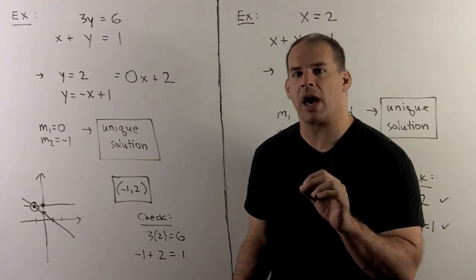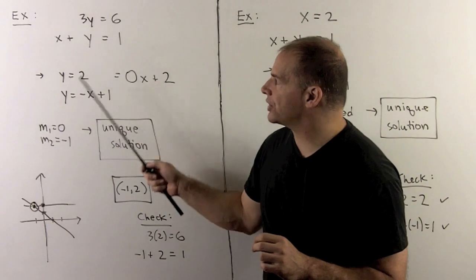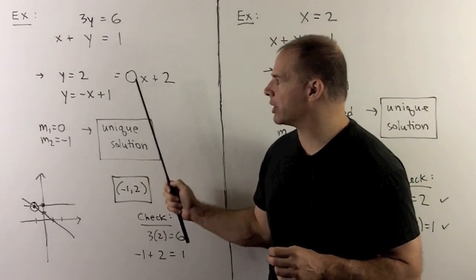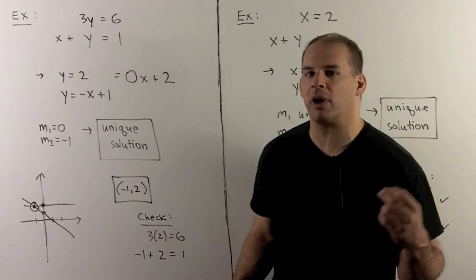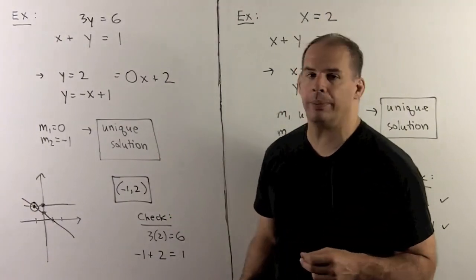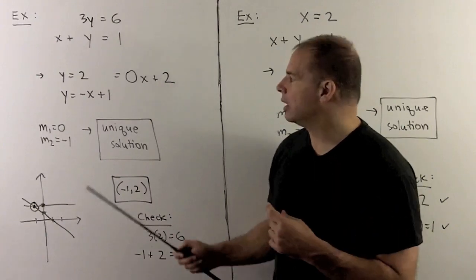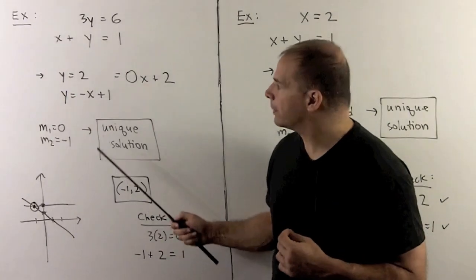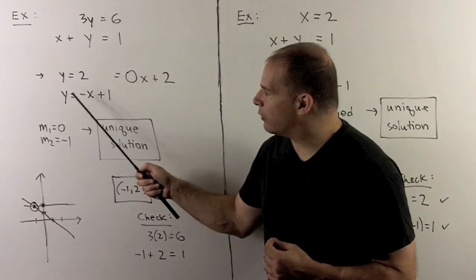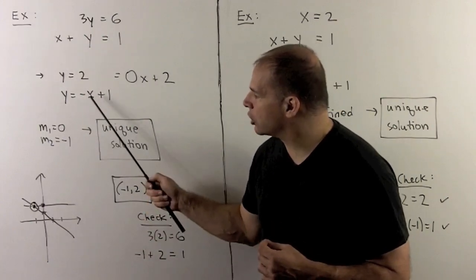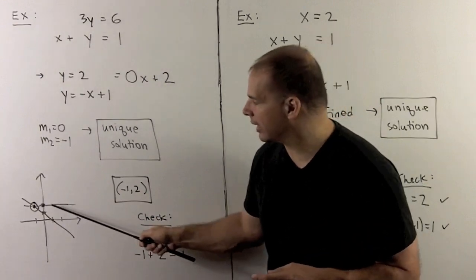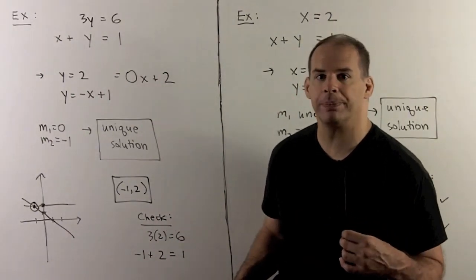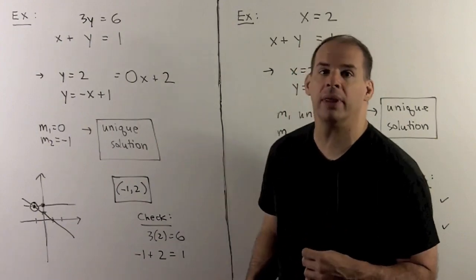We finish with examples using horizontal and vertical lines. Consider the system 3y equals 6 and x plus y equals 1. In slope-intercept form: y equals 2 and y equals negative x plus 1. The line y equals 2 can be written as y equals 0x plus 2, so it has slope 0. Comparing slopes: 0 is not equal to minus 1, so we have a unique solution. Graphing: a horizontal line at y equals 2, and the second line with intercept at y equals 1 and slope minus 1. From the picture, the solution appears to be (minus 1, 2). Checking: 3 times 2 equals 6 ✓, and minus 1 plus 2 equals 1 ✓.